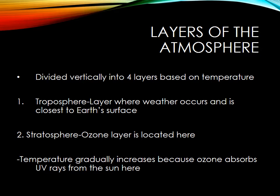The atmosphere is divided vertically into four layers based on temperature. The layer we live in, where weather occurs and which is the closest layer to Earth's surface, is called the troposphere. Moving up away from Earth's surface, we get into the stratosphere, which is the next layer. This is where the ozone is located.